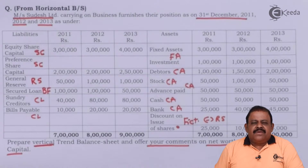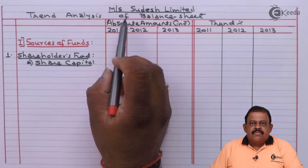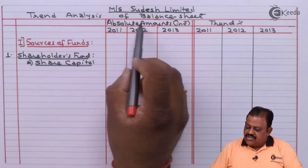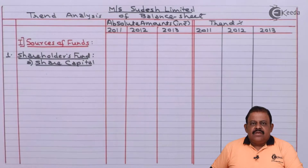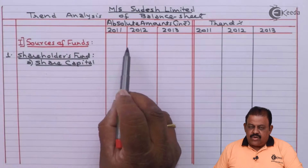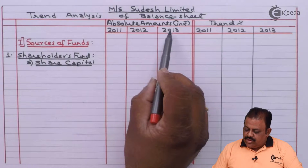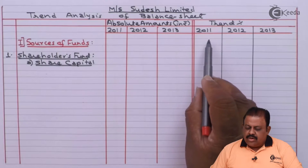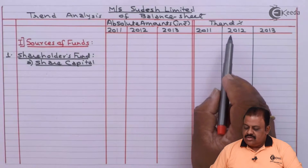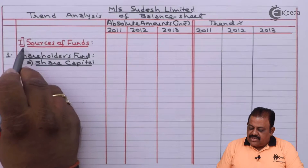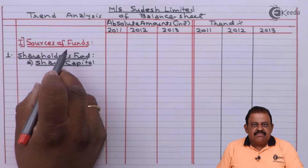Let us prepare the format: Sudesh Limited — Trend Analysis of Balance Sheet. In the format, we keep one column for each year showing absolute amounts and one column for each year showing trend amounts as percentages. The balance sheet starts with the first part: Sources of Funds.